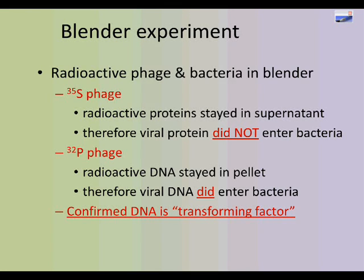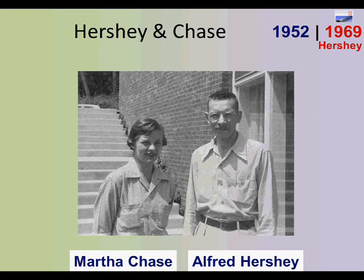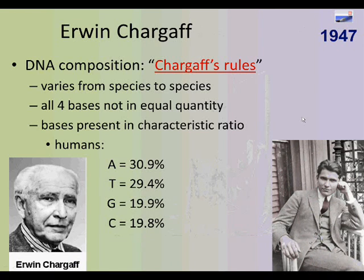So now we know DNA is that transforming factor, confirmed across multiple experiments. Here's a picture of Hershey and Chase — these discoveries were made around the 1950s. Going a bit further, one of the technologies that helped was better microscope technology and better centrifuges that could separate materials using different molecular weights.